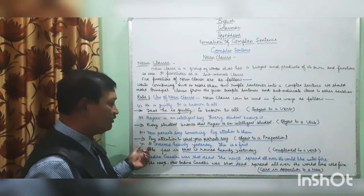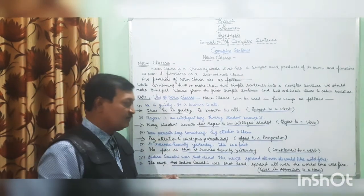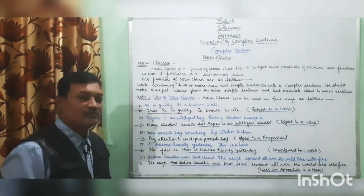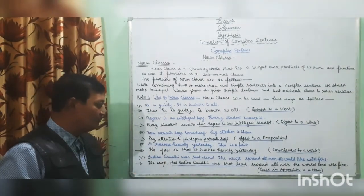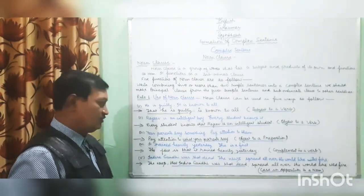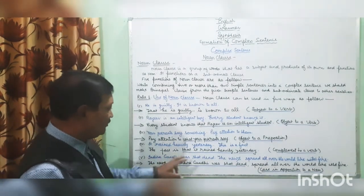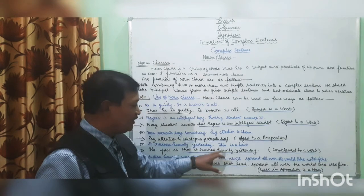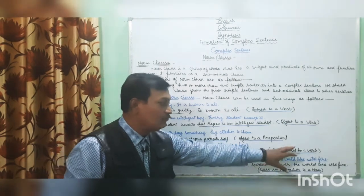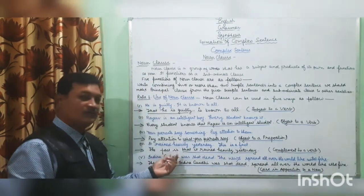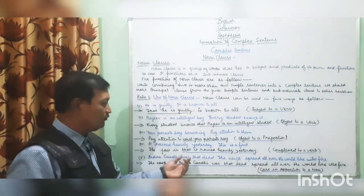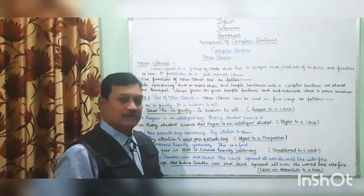Fourth example: 'It rained heavily yesterday. This is a fact.' Combined: 'The fact is that it rained heavily yesterday.' The underlined part is the noun clause, and here it is functioning as complement to a verb. The verb 'is' is a linking verb, so this part is in the place of the complement.